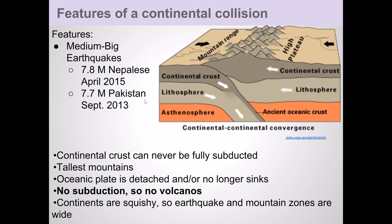Some of the features of this type of convergent boundary are medium to large earthquakes, such as the recent Nepalese and Pakistani earthquakes in the area. The earthquake zones of these particular types of boundaries are more broad and spread out, and not quite as focused as the ones you see with ocean-ocean or ocean-continent convergent boundaries.